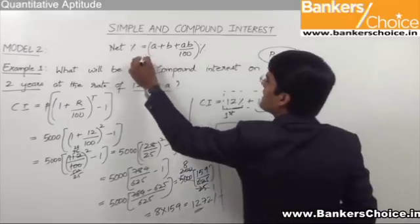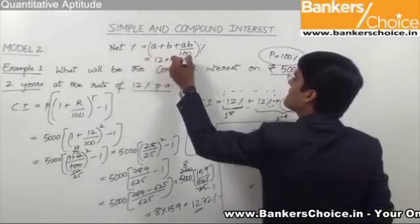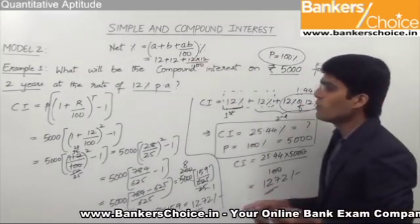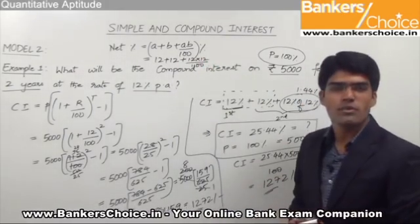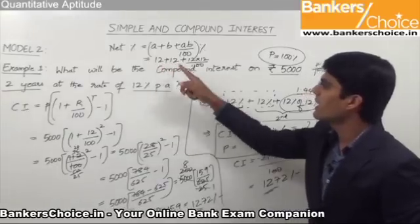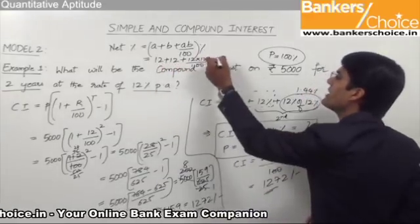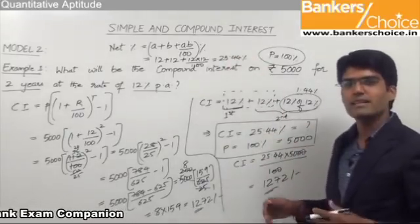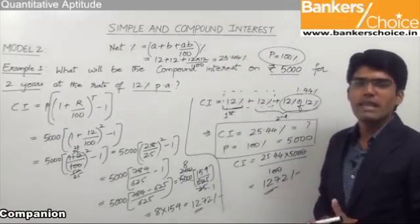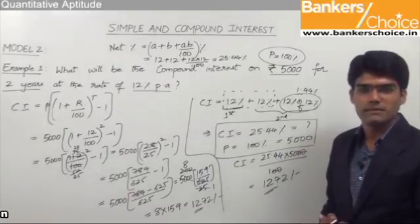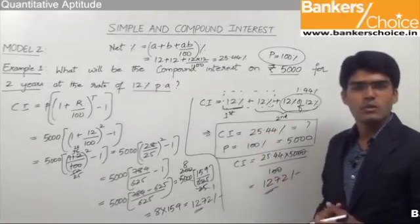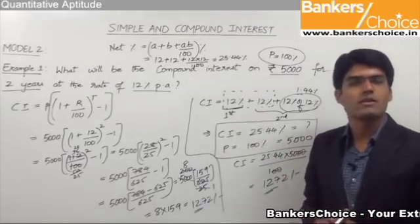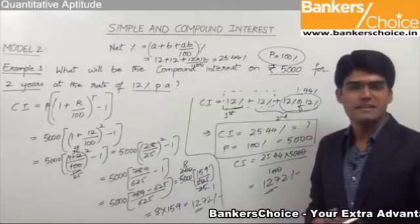Substituting the values: 12 + 12 + (12 × 12)/100 = 24 + 1.44 = 25.44%. So we can blindly apply a + b + ab/100 for two-year compound interest, where a = b = rate of interest. Friends, always try to use the concept of percentages for solving SI and CI questions in a smart way.